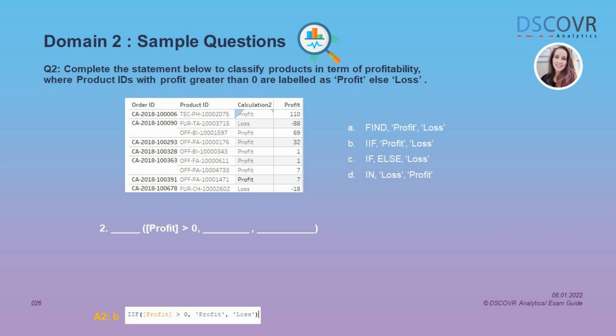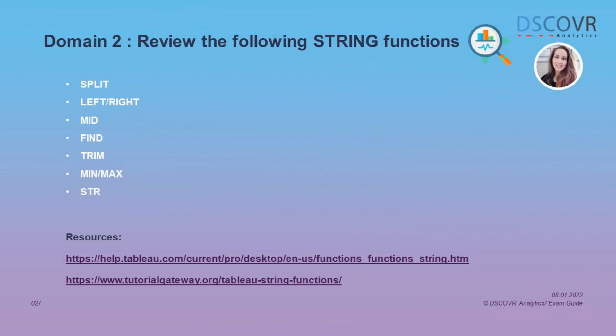This next question may be easy for those with a lot of Excel experience. We need to complete the statement to classify products in terms of profitability — for any product ID with profit greater than zero, label it as 'profit', else 'loss'. The easiest way is to use a derivative of the standard IF/THEN/ELSE expression, so we're going with answer B. Make sure you also review the following string functions — left and right — because you may get a question asking you to fill in the blanks.